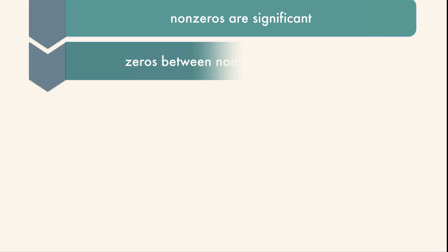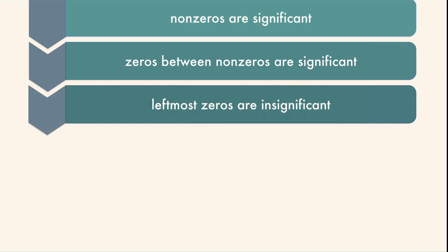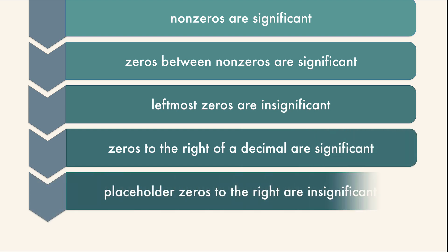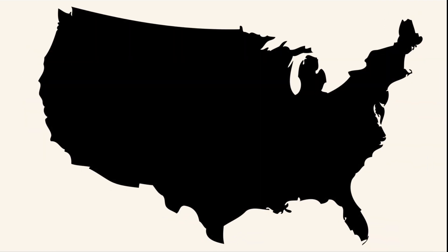Zeros between non-zeros are significant, but the leftmost zeros are insignificant. Zeros to the right of a decimal are significant. Placeholder zeros to the right are insignificant. And counted numbers or exact conversions have an infinite amount of significant figures. Now that might be a little confusing, so let's use a little trick that I know. If you picture the United States, you know that the Pacific Ocean is on the left and the Atlantic Ocean is on the right. But here the P will mean that the decimal is present, and the A will mean that the decimal is absent.